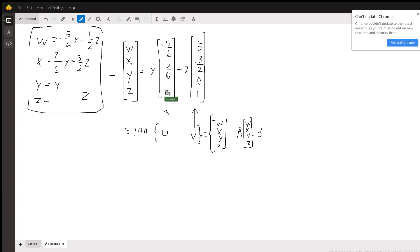And you see I've written that - this is the u and v that you're asking for. Span of u, v equals all of the possible w, x, y, z vectors such that A, which is our original matrix, times this vector equals zero.